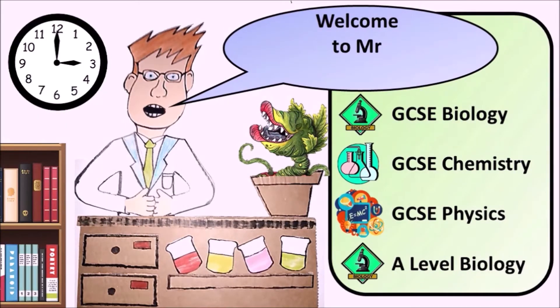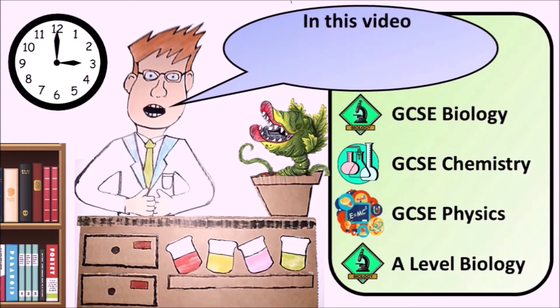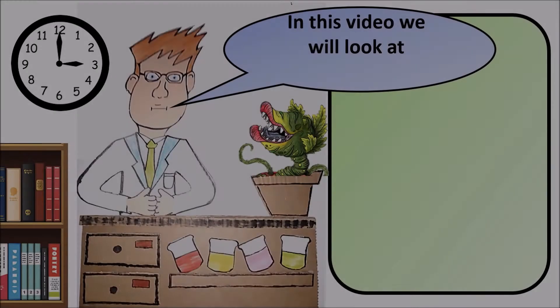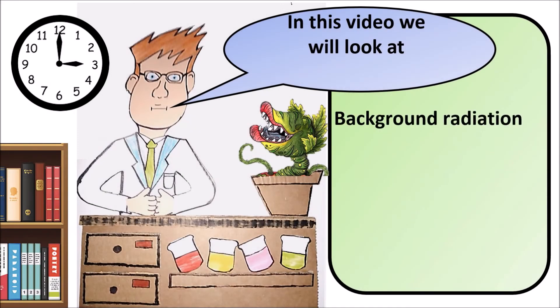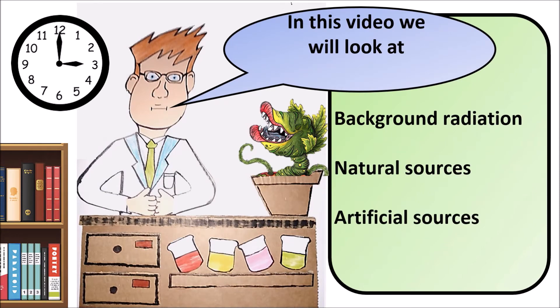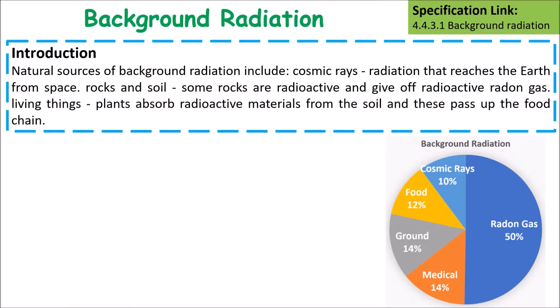Welcome to Mr Chalk's revision tips. In this video we will look at background radiation, natural sources and artificial sources. Natural sources of background radiation include cosmic rays — radiation that reaches the earth from space — as well as rocks and soil.